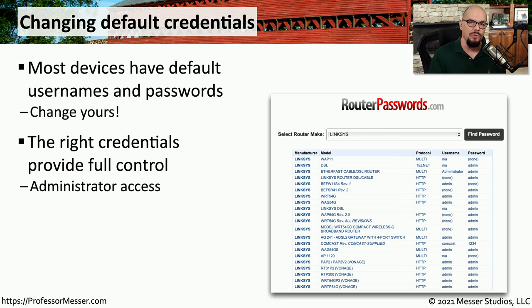One type of access control list is a firewall rule. We may want to allow or disallow traffic through our network based on a series of rules that we can add to our firewall. This list of rules is followed one at a time, and if the traffic matches that particular rule, then it follows the disposition that's in the action column. When you get to the bottom of the list on most firewalls, there is an implicit deny, which means if none of these rules match, that traffic is automatically dropped.